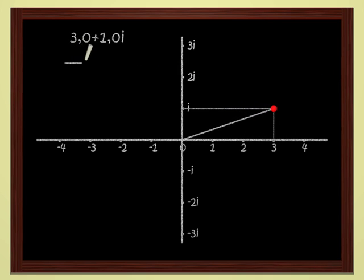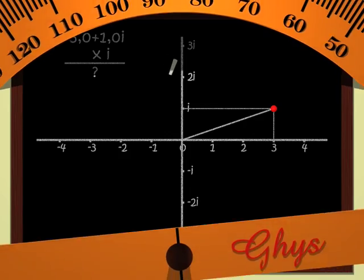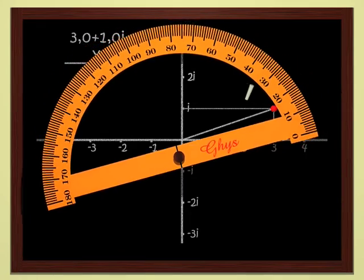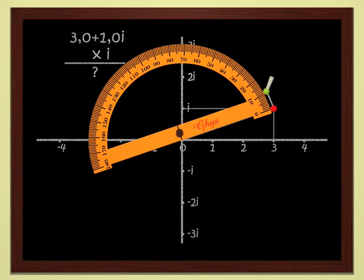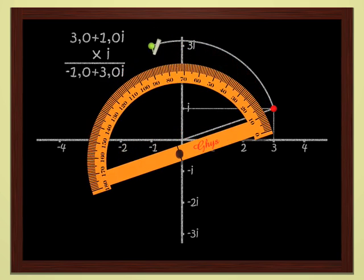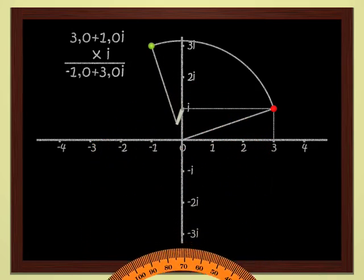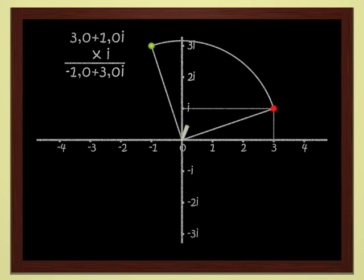Multiplying by i is not difficult either, since we know that i corresponds to a quarter turn. In order to multiply 3 plus i by i, we just have to rotate by a quarter turn. We get minus 1 plus 3i. Not so complicated, these complex numbers.